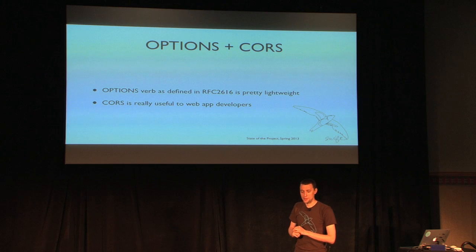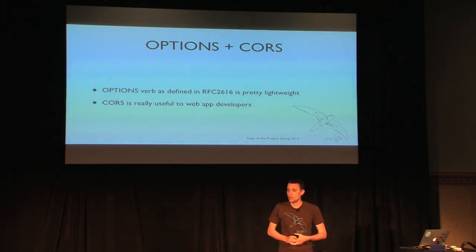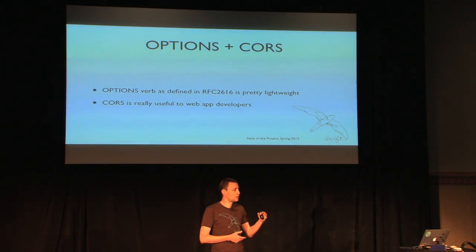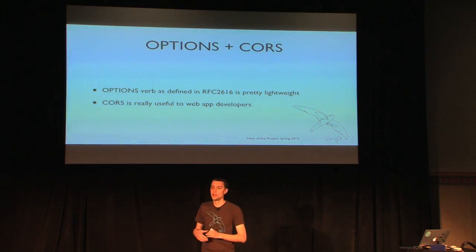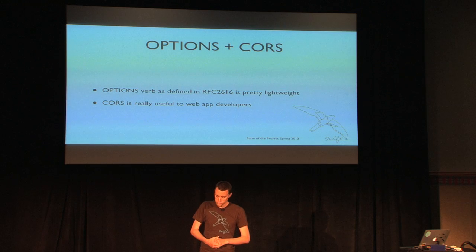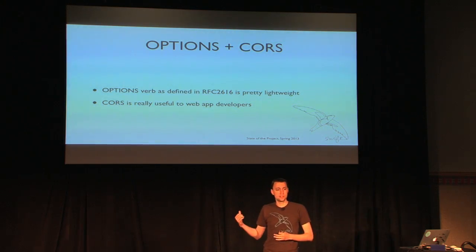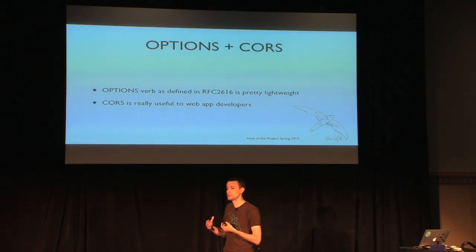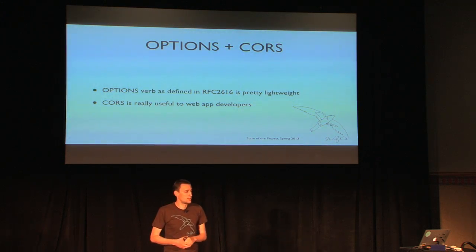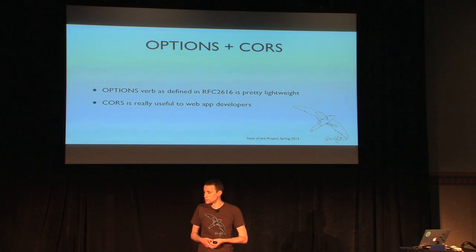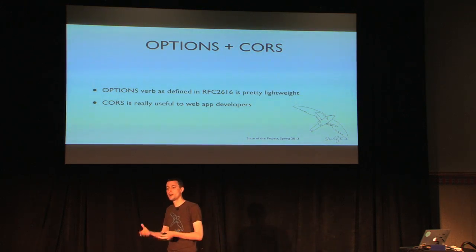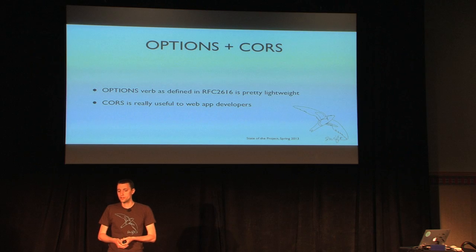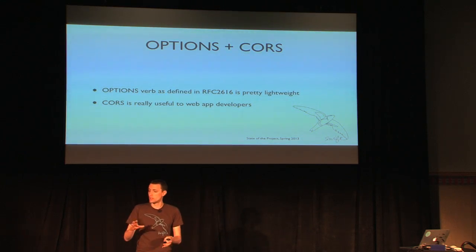We've got a lot of great new features. One nice use case, especially when thinking about user data, is using Swift to directly store data from web applications. In the HTTP spec there is the concept of an OPTIONS verb, which we had not implemented. It's a way to get information about a resource — you can do an OPTIONS request to a particular object and find out that you can do a GET, PUT, copy, or delete on it.